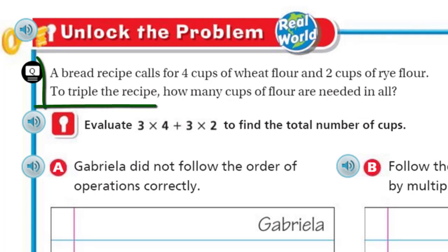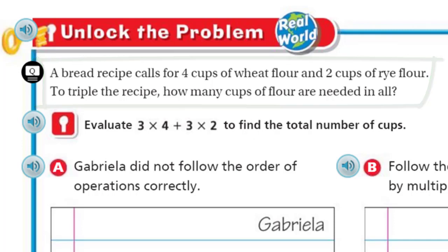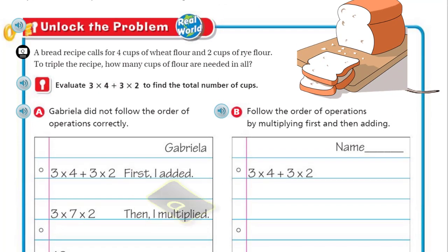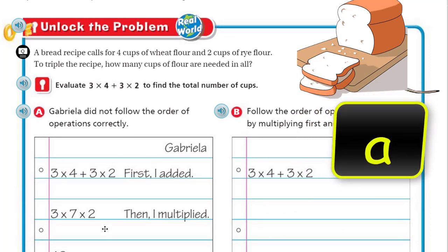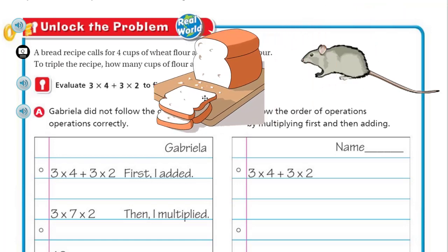So let's come down and unlock the problem. It's real world. Here it says a bread recipe calls for four cups of wheat flour and two cups of rye flour. To triple the recipe, how many cups of flour are needed in all? Okay, cool. And look at that bread.